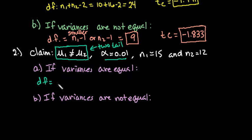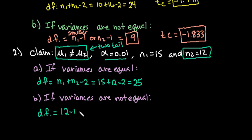So for the degrees of freedom, for if the variances are equal, we would take n1 plus n2 minus 2. So it would be the 15 plus 12 minus 2, which does give us 25. So that's our degrees of freedom for this one. And our degrees of freedom for the second one would be the smaller of the two. So since 12 is smaller, we would do the 12 minus 1, which is going to give us 11.